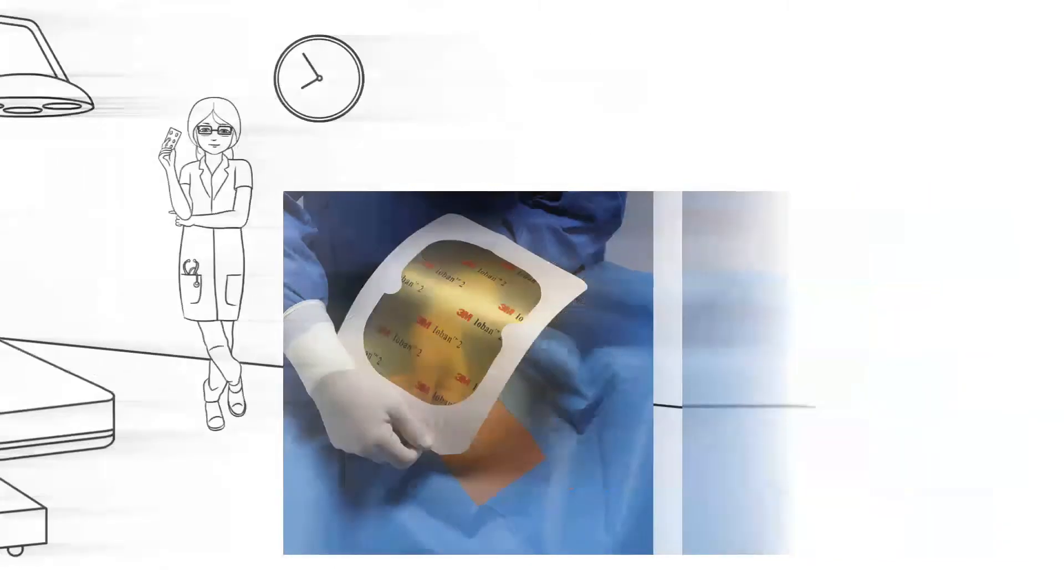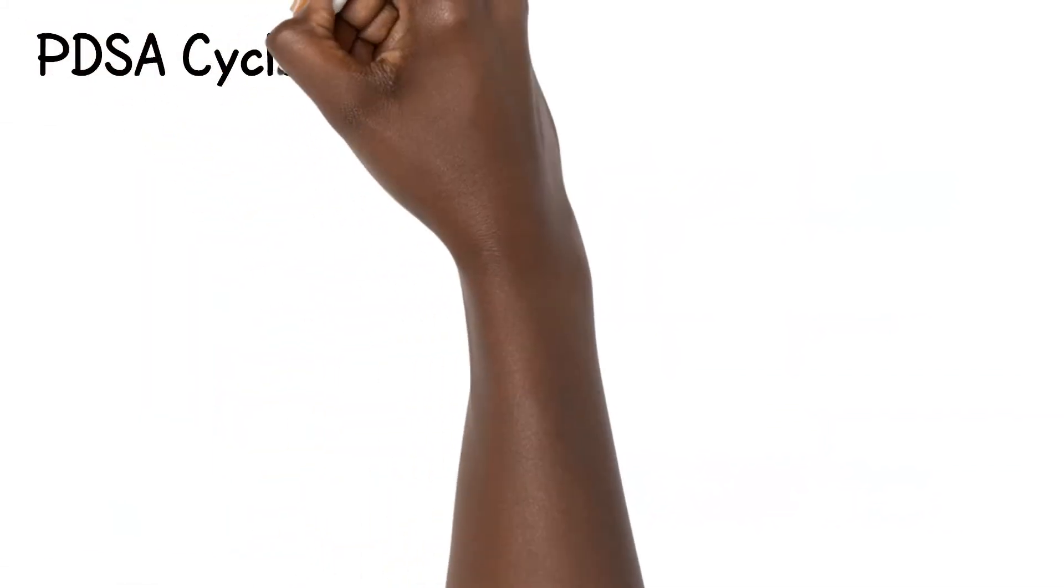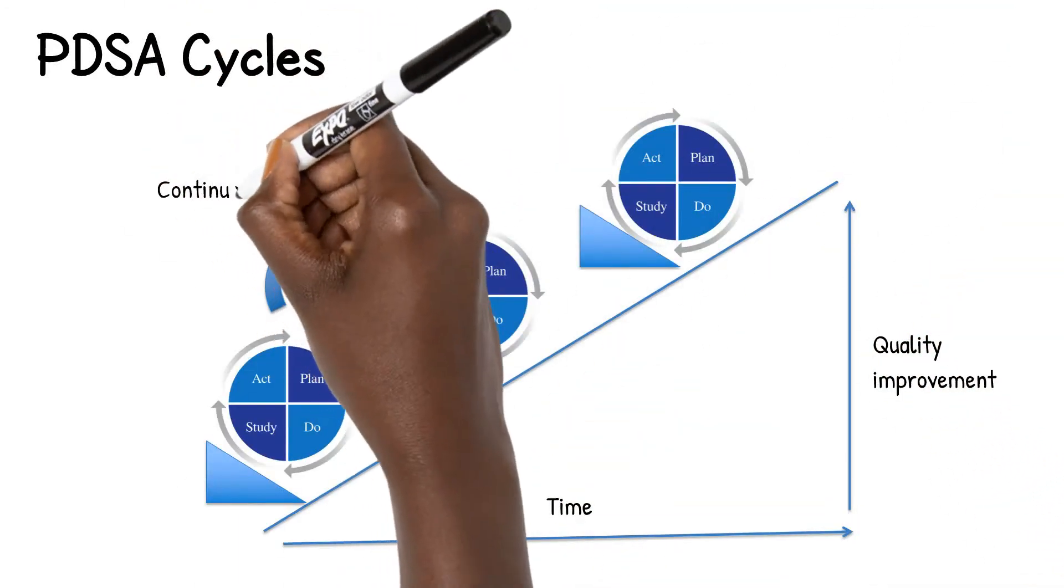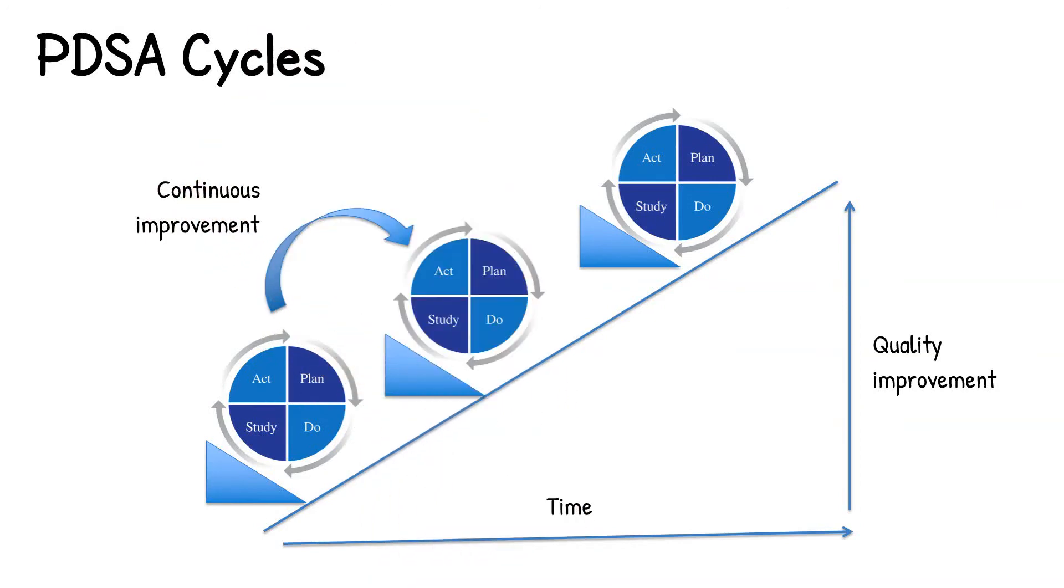As illustrated by the quality improvement example, the PDSA cycle is meant to be an iterative process that builds on what you have learned so that quality is continuously improved over time.